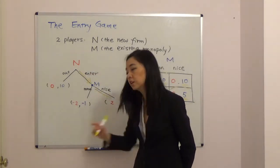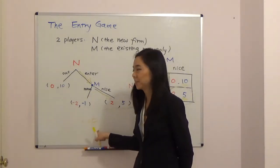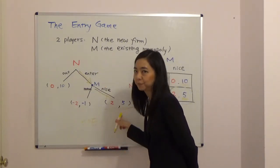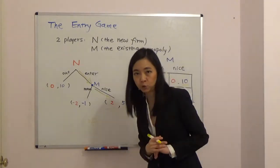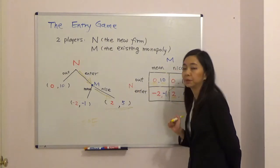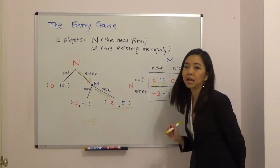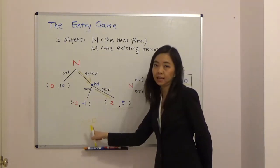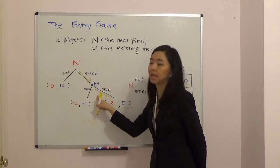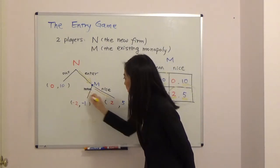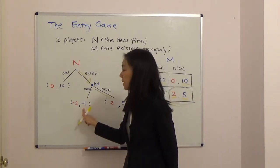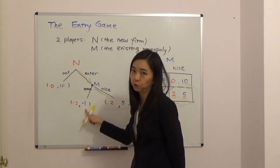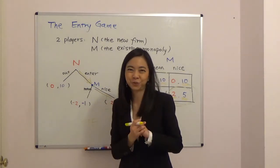Using backward induction, there is only one sub-game perfect equilibrium: the new firm enters and the existing monopoly plays nice. Even though there are two Nash equilibria — new firm stays out with monopoly playing mean, and new firm enters with monopoly playing nice — only one makes sense. The monopoly's threat to play mean is an incredible threat, because if the new firm actually entered, the monopoly would be shooting its own foot.